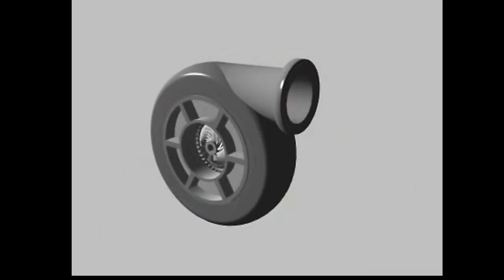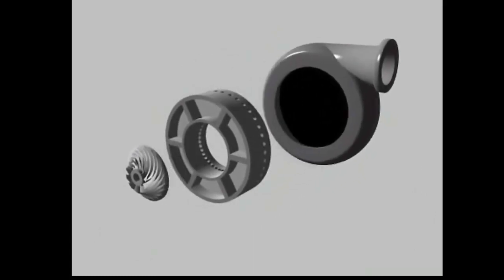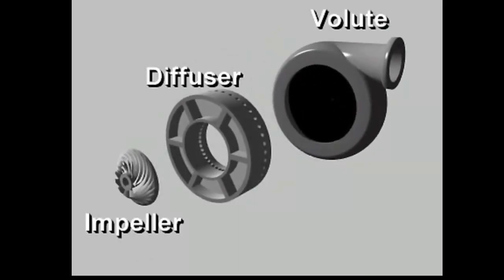A centrifugal compressor has three basic components: an impeller, a diffuser, and a volute casing. Large capacity centrifugal compressors may have two or more impellers or stages in the same casing.